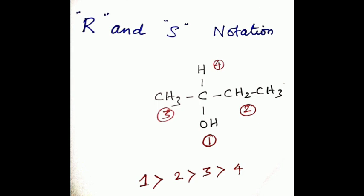The application of the rules can be illustrated with two-butanol enantiomers which has a sequence OH, C2H5, CH3, and H. Because oxygen has the highest priority, the number is 1, and hydrogen has the lowest atomic number, priority number 4.